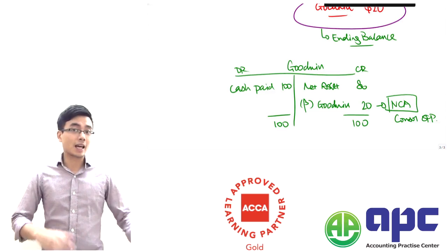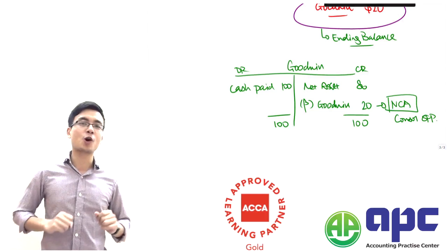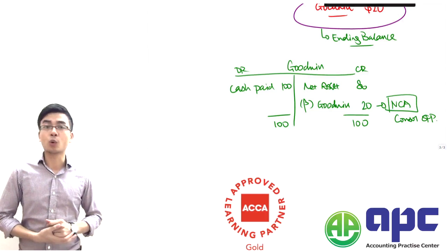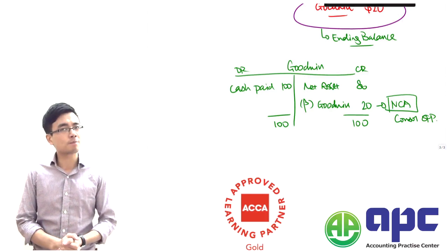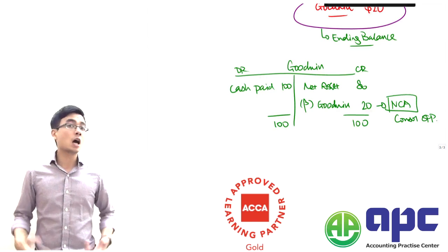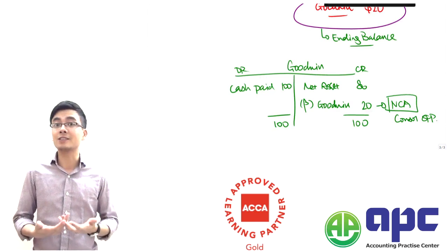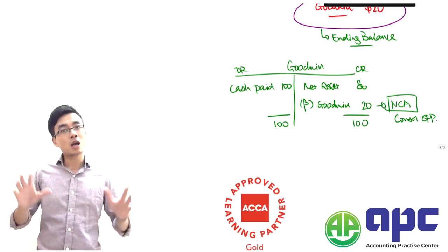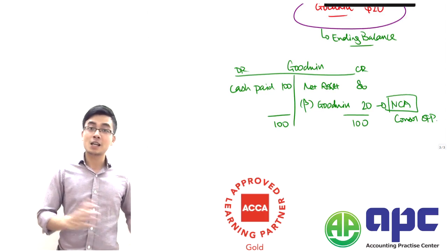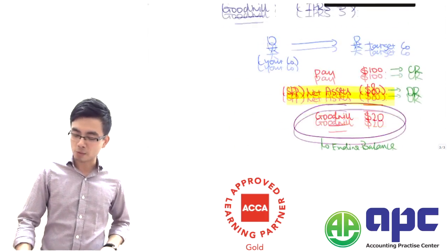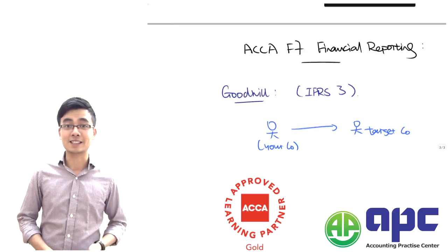In later sections, we will introduce more complicated scenarios where you're not going to acquire 100% of the subsidiaries but only 80% of them. In that case, how are we going to account for goodwill? We'll also look at goodwill impairments and the different treatments under IFRS number 3 for full goodwill and partial goodwill. We will look at those in a second. So, happy studying and, more importantly, best of luck in your upcoming paper F7 exam.